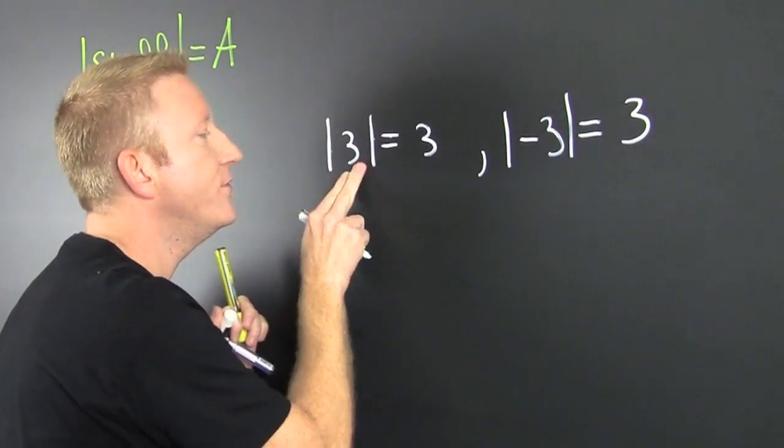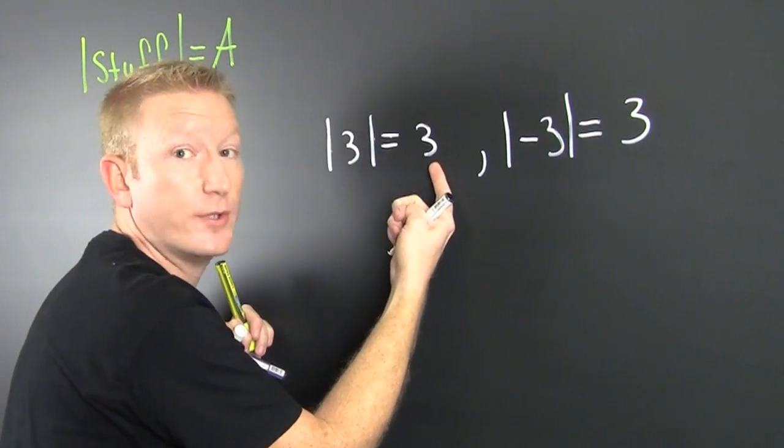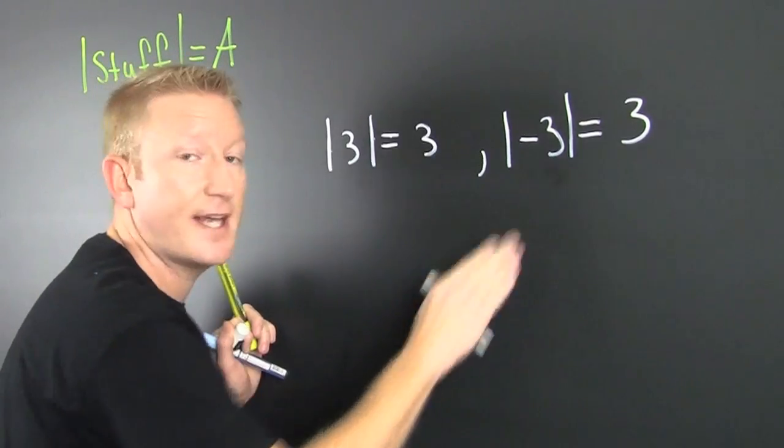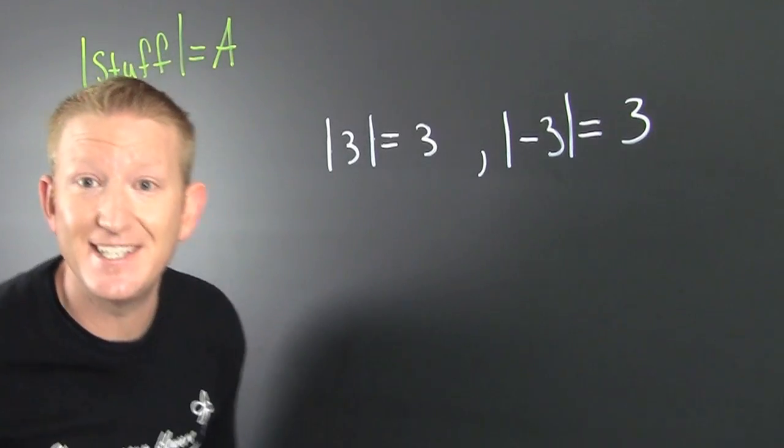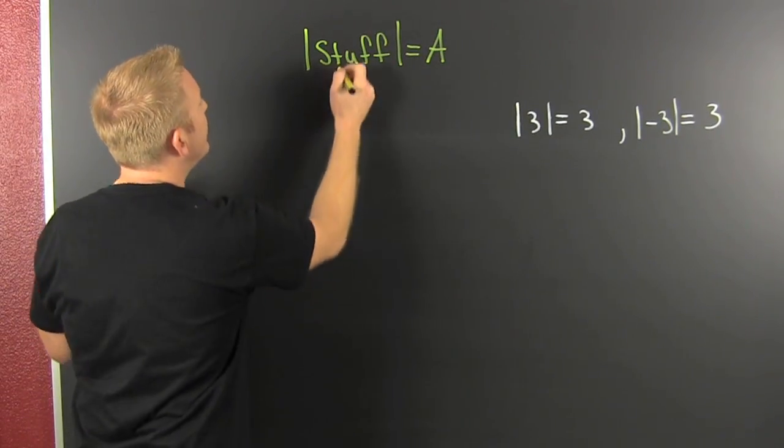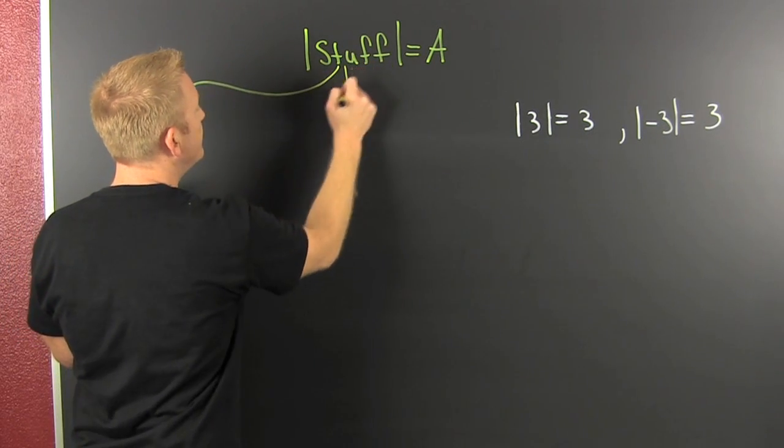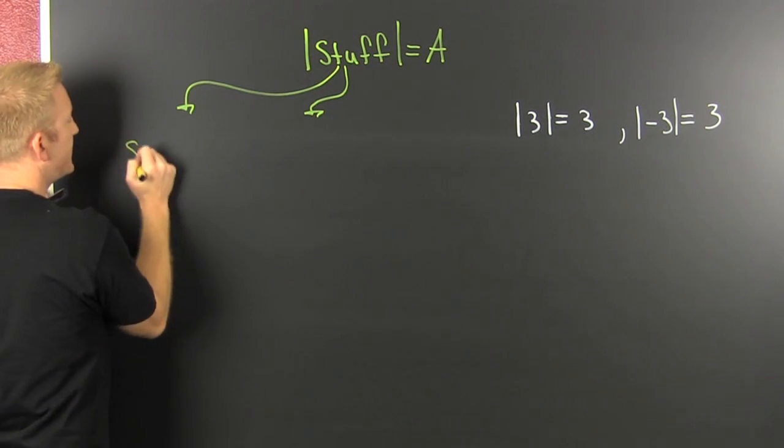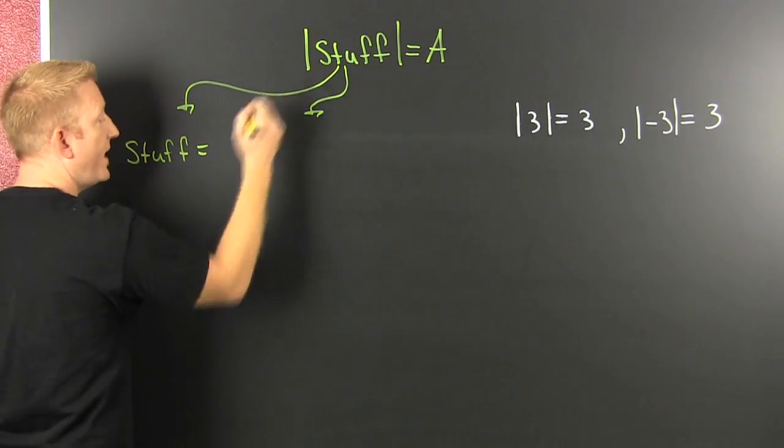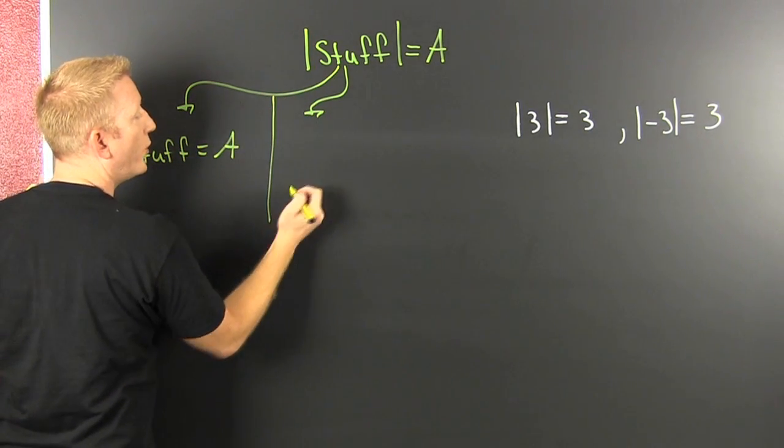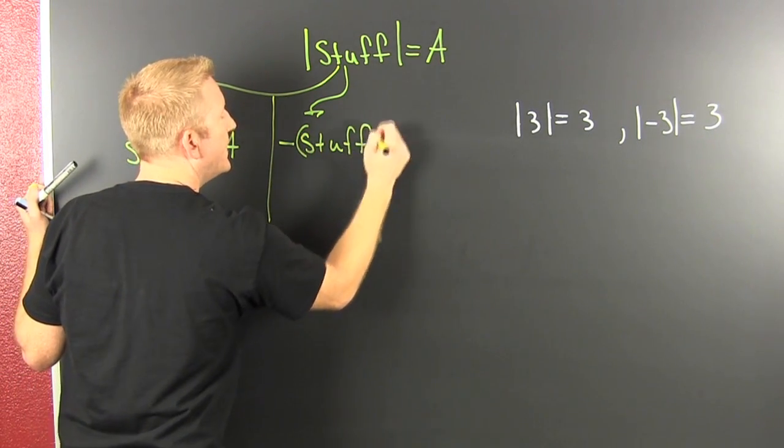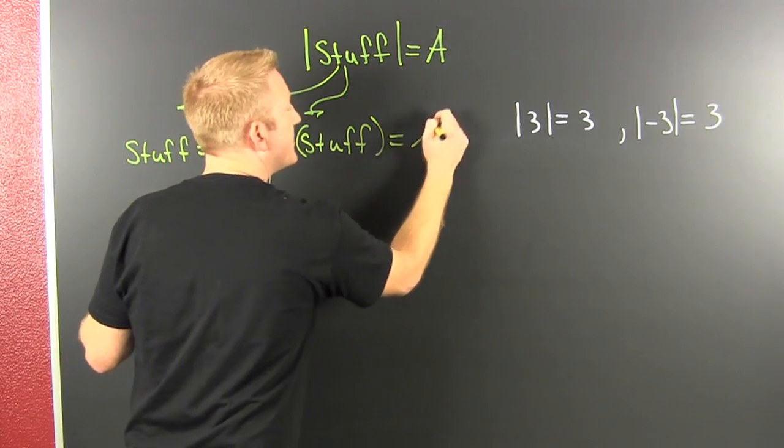So wait a minute. If you have the absolute value of stuff equal to something else, that stuff on the inside can be positive or that stuff on the inside can be negative. And that's where we get to this stuff over here. I need you to break this up into two different scenarios. One where the stuff is positive and equal to A or where the stuff is negative and equal to A.